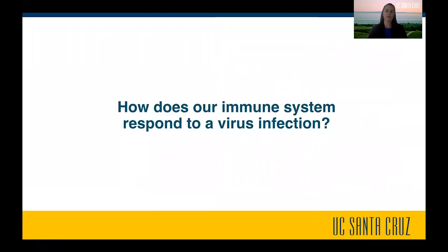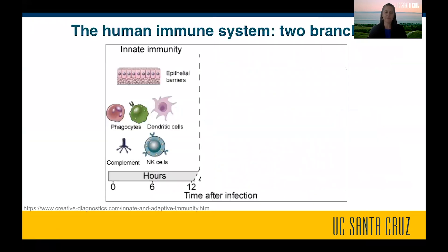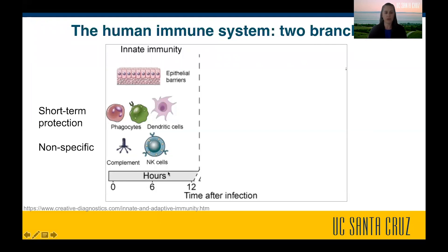How does our immune system respond to a virus infection? In our immune system, there are two branches. First, there's something called innate immunity, and this happens very quickly within hours of a virus infection. This innate immunity is short-term protection — just for hours — and it's nonspecific. You can think of innate immunity as like a house alarm saying there's an invader, but it doesn't distinguish between influenza, coronavirus, or a bacterial infection.